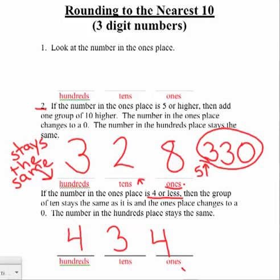I look and the number in the ones place is 4 or less, so the number in the tens place is going to stay the same. My number in the hundreds place will always stay the same as well. So 430 is my new number, my number in the ones place turns to a 0. That is how I round to the nearest ten using three-digit numbers.